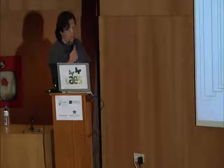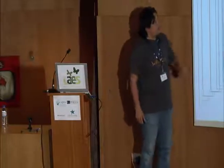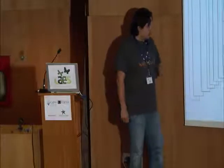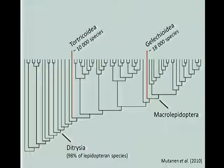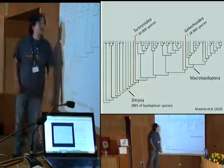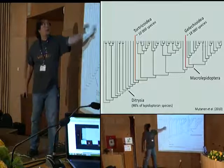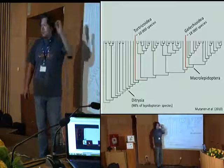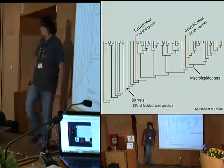I should first explain what lauroditrisian moths are. This is a higher level phylogeny of Lepidoptera and you can see that about 98% of all Lepidopteran species belong to the group called Ditrysia, and around half or more than half — and probably all species of moths and butterflies — belong to the group Macrolepidoptera. These primitive or basal lineages are then called Lauroditrisia or Apoditrisia. I will talk about two of the most diverse superfamilies in Lauroditrisia: the Tortricoidea and the Gelechioidea superfamilies.